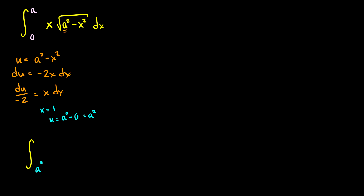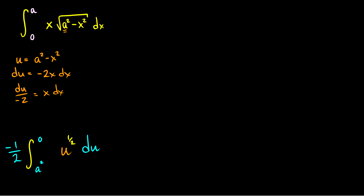And if x equals a, then u equals a squared minus a squared, which is 0. So the upper limit is 0. This gives the integral from a squared to 0 of u to the 1/2, and x dx becomes du over negative 2, so we pull out negative 1/2. We can flip the limits of integration and multiply by negative 1, giving 1/2 times the integral from 0 to a squared of u to the 1/2 du.